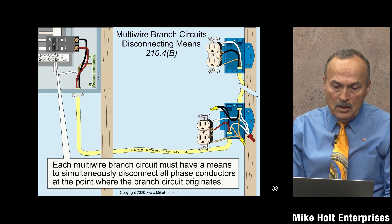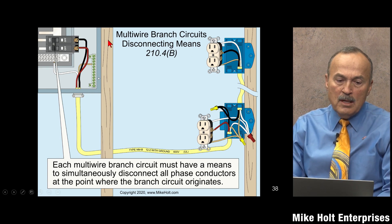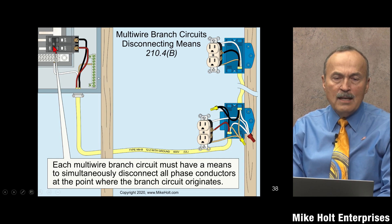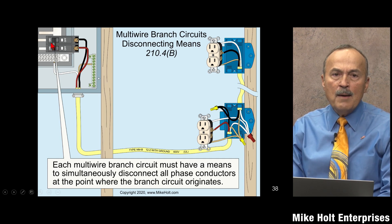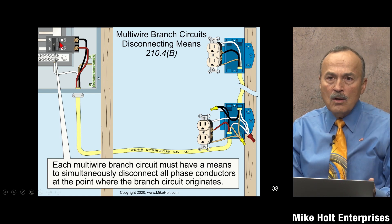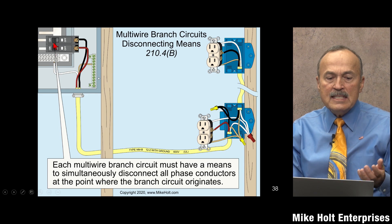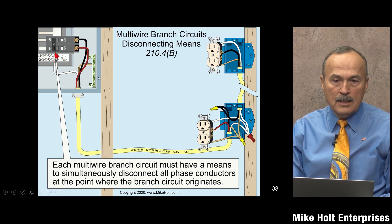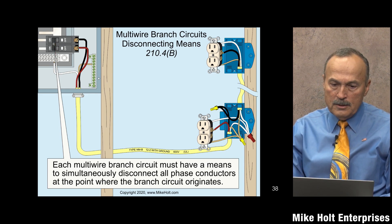Now that we know what a multi-wire branch circuit is, the code requires the ability to simultaneously open all conductors of the circuit. You can use two single-pole breakers with a handle tie or a common-trip circuit breaker. The important point Jennifer raised is that this simultaneous disconnecting means allows proper lockout/tagout — this is a disconnecting means for the entire multi-wire branch circuit.